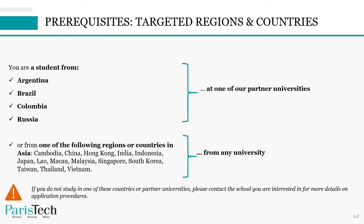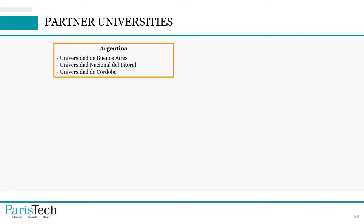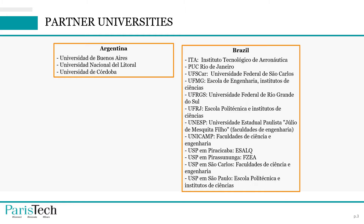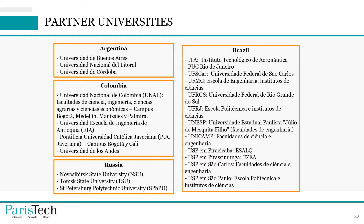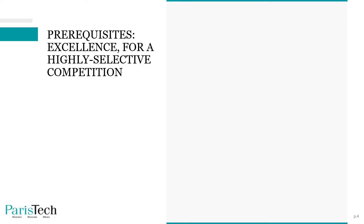Please note that if you do not study in one of these countries, or you do not study at one of our partner universities, you should contact the school you're interested in for more details on application procedures. As a reminder, you will find the list of our partner universities in Argentina, Brazil, Colombia, and Russia. Another prerequisite to apply to the PariTech International Admission Program is excellence, as the competition is highly selective.